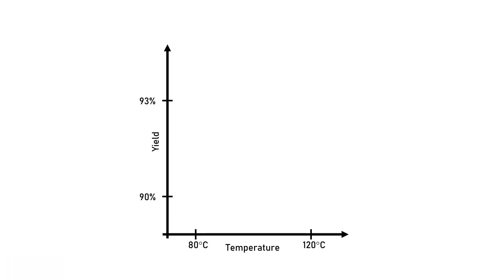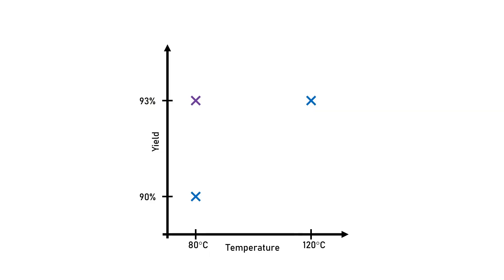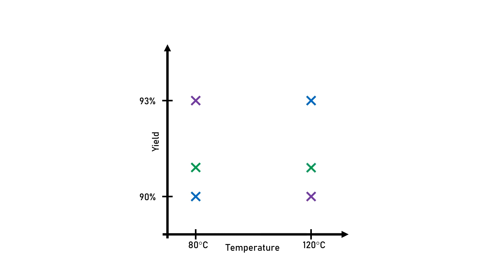Let us say you're interested in how the temperature changes the yield of a chemical reaction. You perform an experiment at 80 degrees which results in a yield of 90%, and you perform a second experiment at 120 degrees which results in a yield of 93%. You are thrilled and tell your colleague, but he is a bit confused — he performed the same experiment last week and got the opposite result. So who is right and who is wrong? You go to a third colleague and ask her to repeat the experiment, but she observes a yield of 91% for both experiments regardless of temperature.